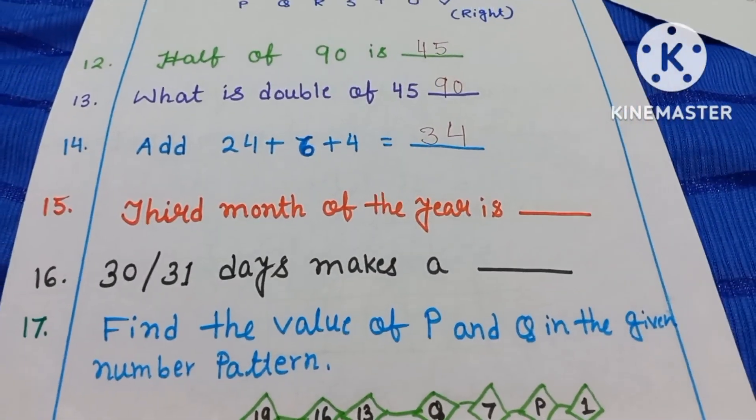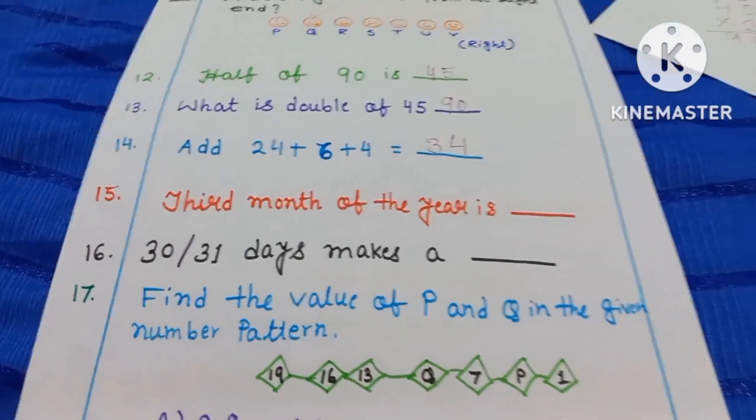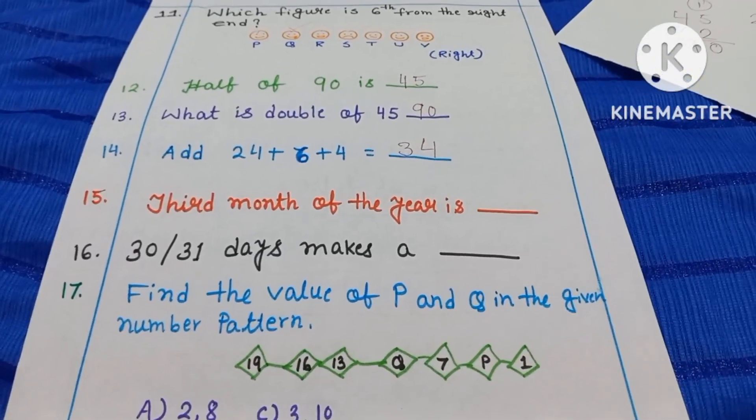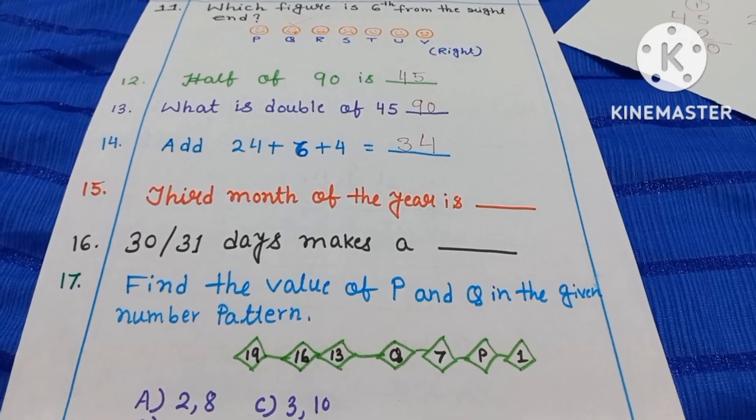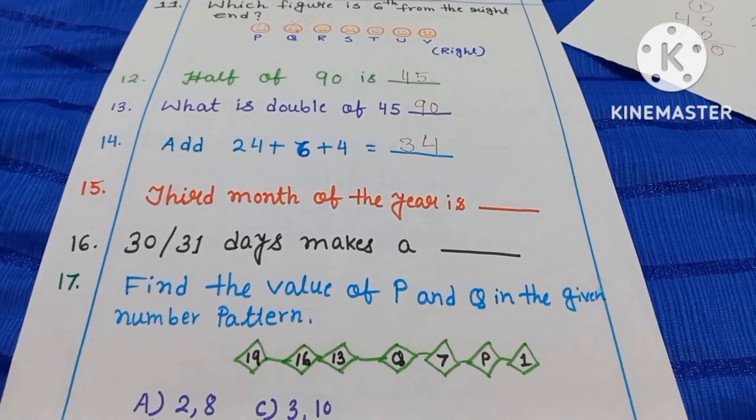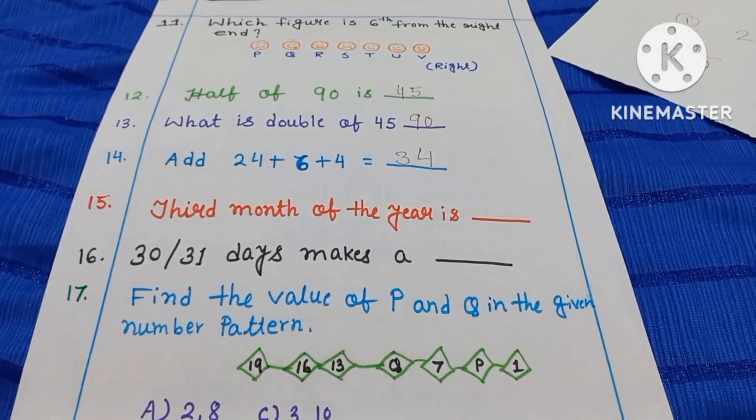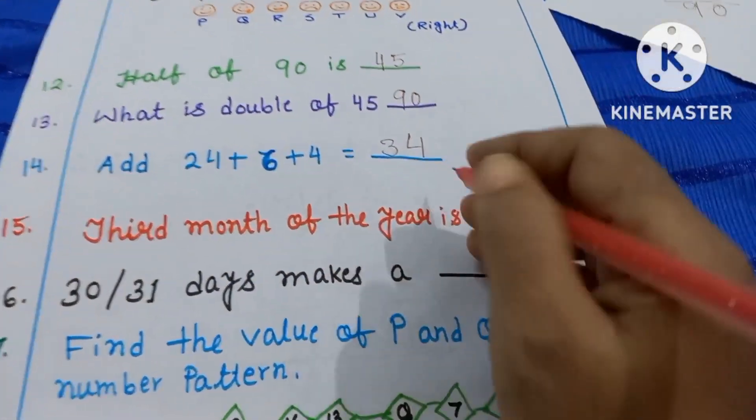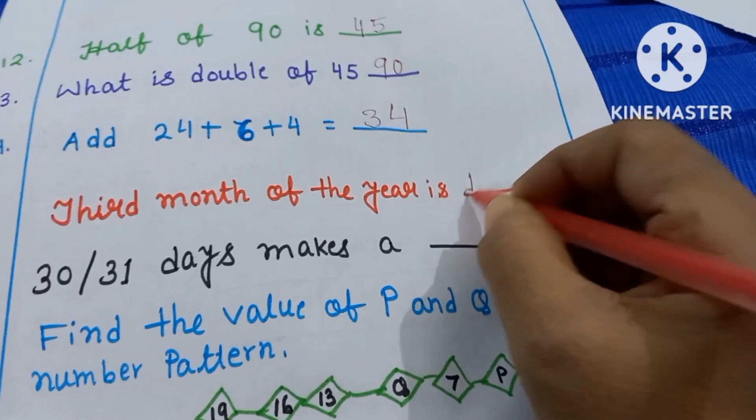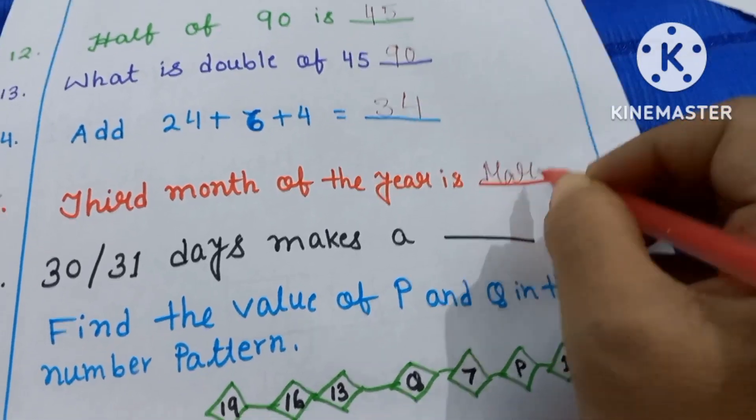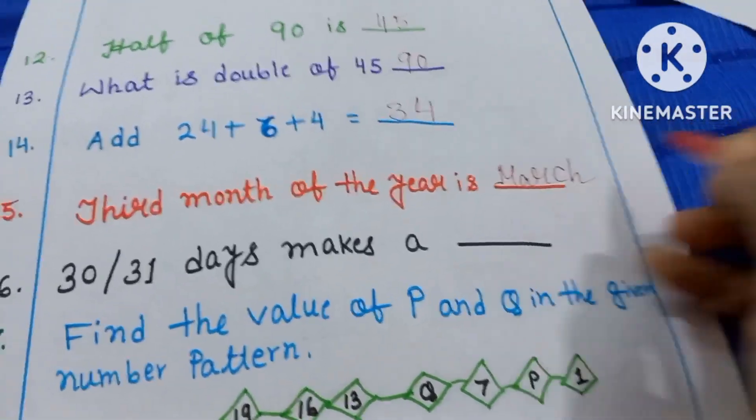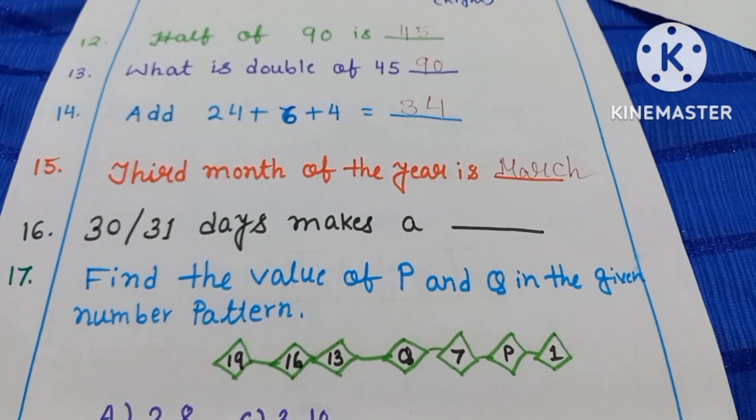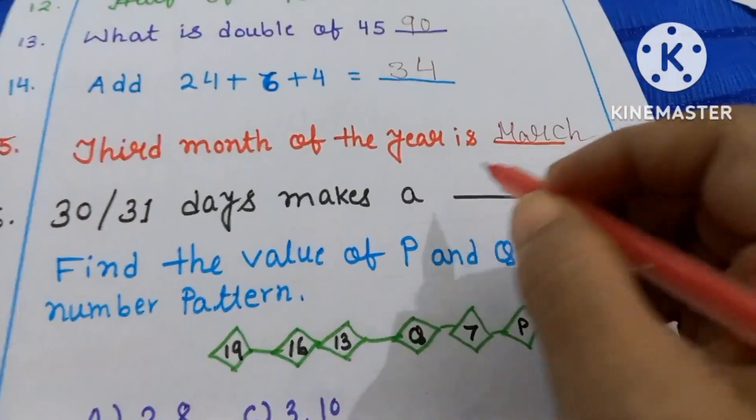Question 15. 3rd month of the year is? If you start your counting from the month of January, 1st month January, 2nd February and 3rd. So 3rd month of the year is March.